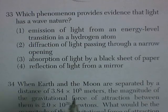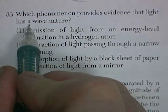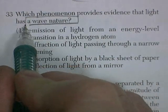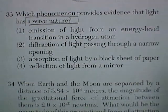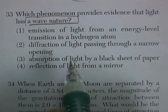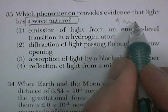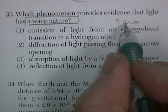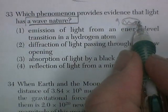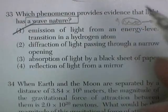Question 33 — this one's a tough one. Which phenomenon provides evidence that light has a wave nature? Emission of light from an energy transition in a hydrogen atom — light given off when an electron falls in hydrogen — doesn't really prove wave nature; it actually proves the opposite, that it's a little pulse or photon of light. So not that one.